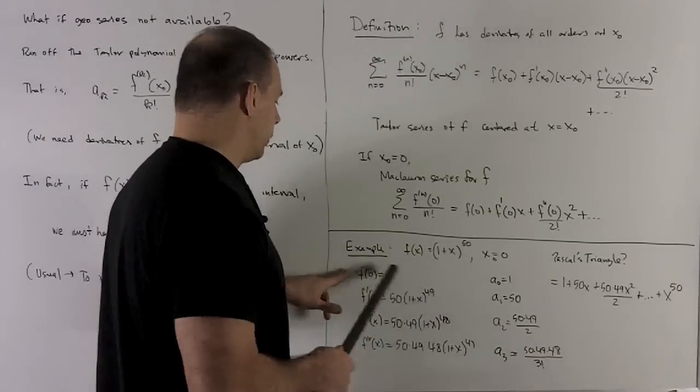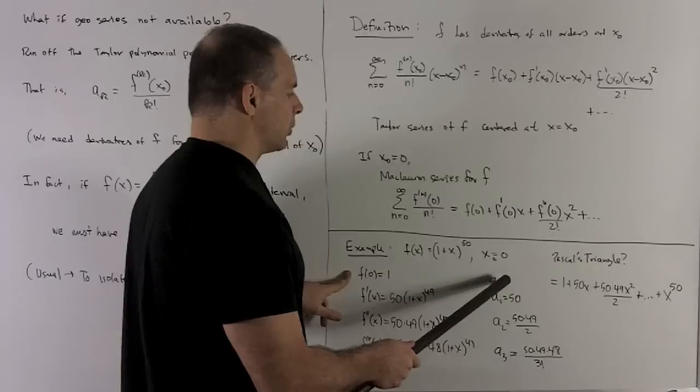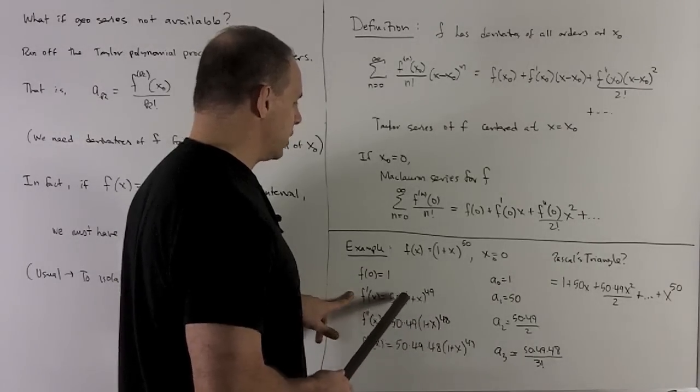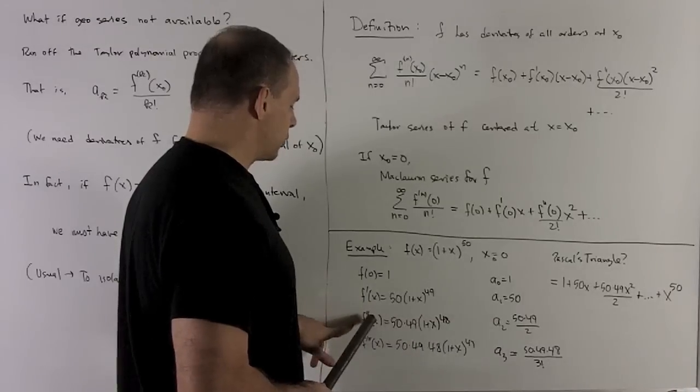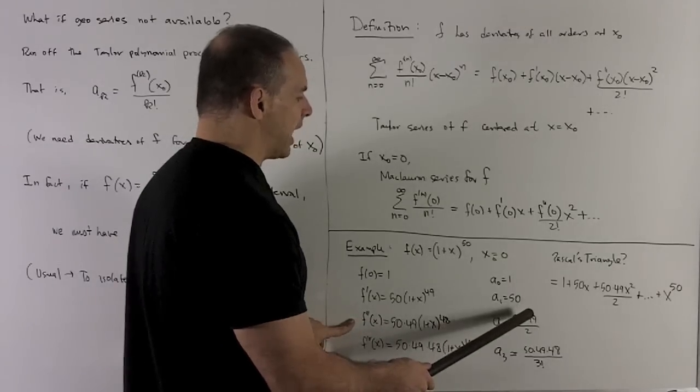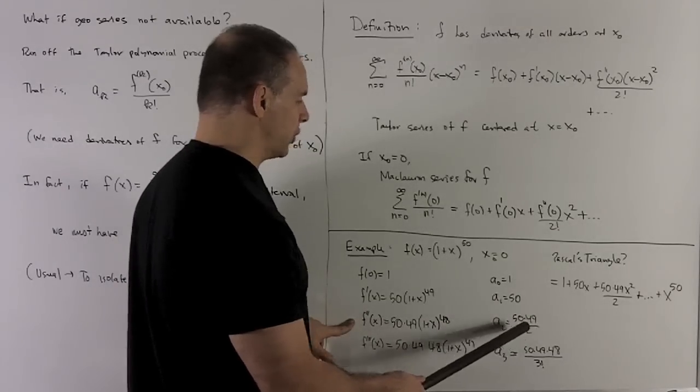So what are we going to do? Our coefficients are going to be a zero equals 1. A1 is just going to be equal to what we get when we put a zero in here. So I get a 50. Second derivative, it's going to give me, when I put a zero in, 50 times 49, and then I have to divide by 2 factorial. So it's just 2.